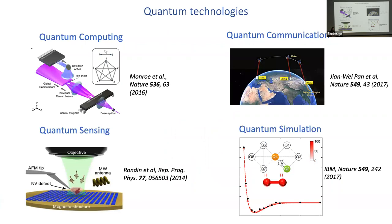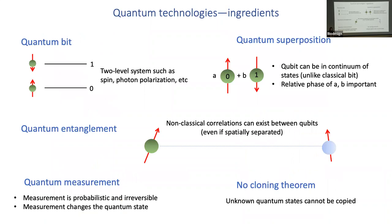When we talk about quantum technologies, usually we mean these four different pillars. The most well known is quantum computing. Quantum communications and quantum networks is also seeing a lot of investment and research efforts. Then there's quantum sensing and quantum simulation. Strictly speaking, quantum simulation can be thought of as part of quantum computing, but it's a really big field on its own right, so we do tend to separate it out. The foundation of all these technologies are fundamental features of nature, especially quantum mechanics.